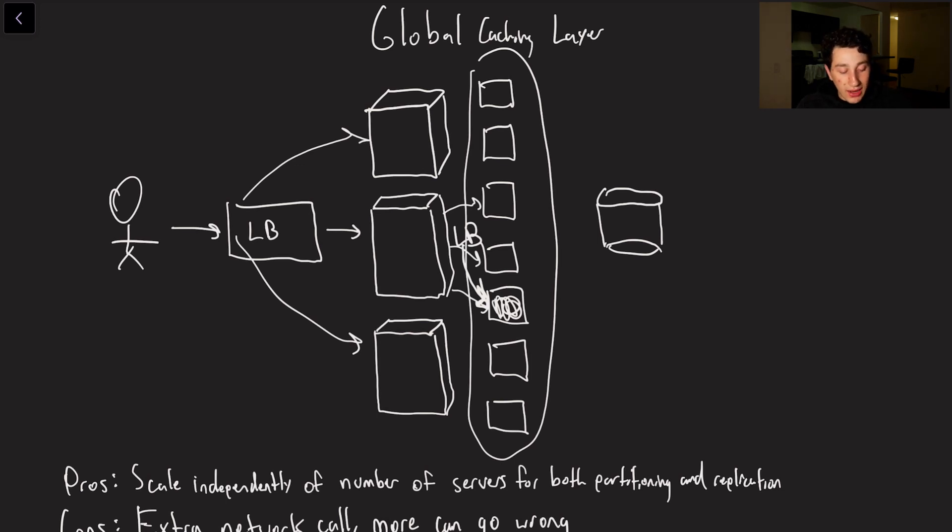This layer can scale on its own. The biggest con of course is that basically our cache is no longer local to the application server. So now we have to make an extra network call in order to access that data, which could definitely be expensive. Additionally we now just have more moving parts in our system, which means more things can fail. We have to think about fault tolerance a little bit more, and of course practically speaking sometimes that is not very good.